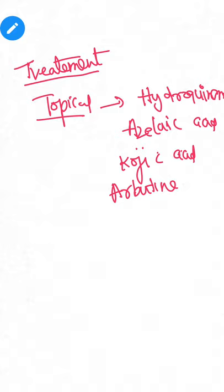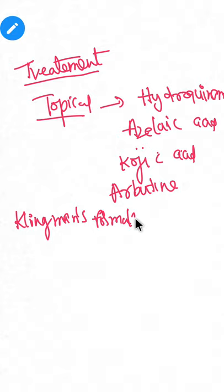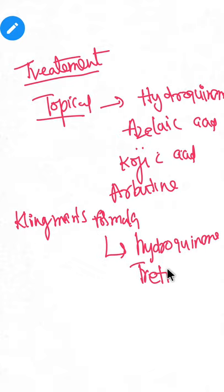There is one formula called Kligman's formula. In Kligman's formula, we use three drugs: hydroquinone, tretinoin, and steroids. In this formula we use these three drugs for melasma.